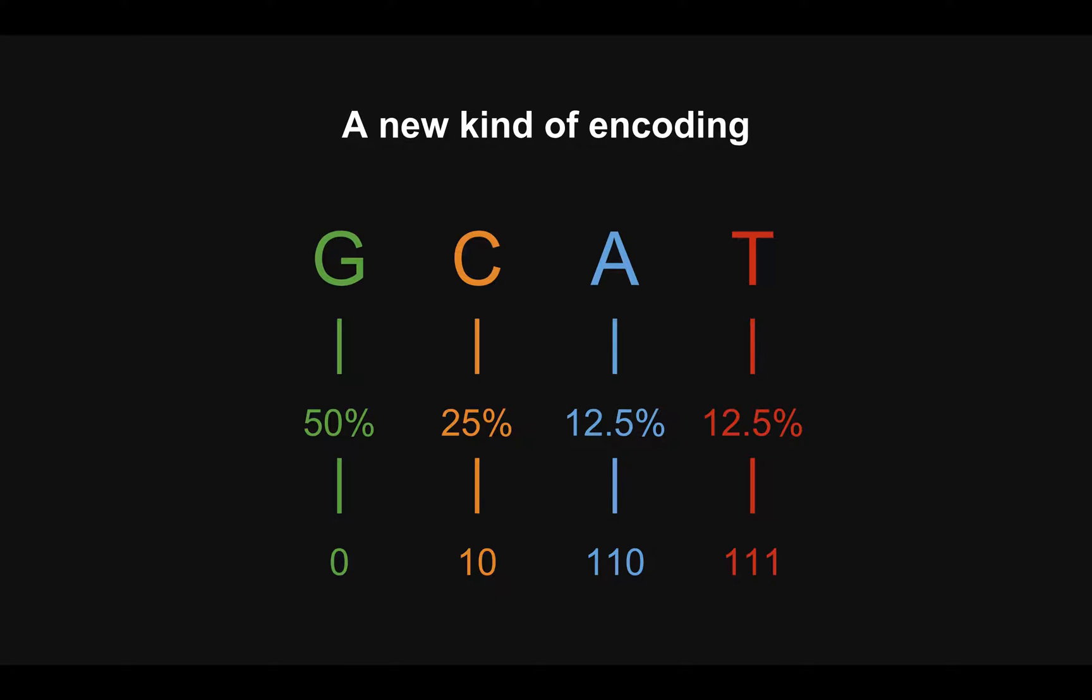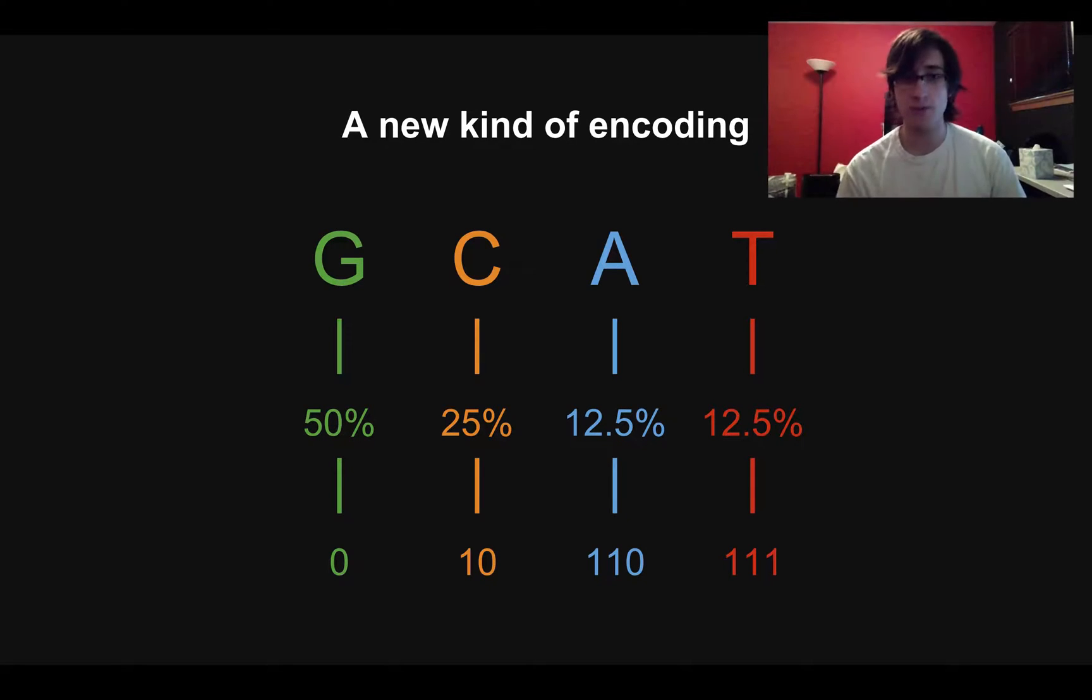So here is a way we could encode DNA that's a little bit different than how we did it before where each thing was the same number of bits. So in this scheme, G, which is the most probable, is encoded as a single bit. It's just zero. And C, which is the second most probable, is encoded as two bits. It's one zero. And A and T are both encoded as three bits.